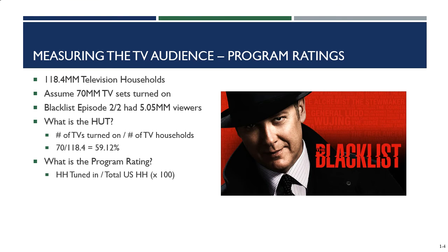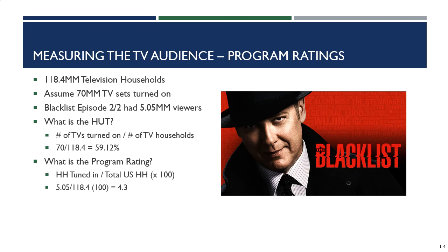Now let's look at the program rating. We take the number of households tuned into the episode and divide by the total number of U.S. households: 5.05 million divided by 118.4 million, multiplied by 100. The TV rating for that episode of Blacklist was 4.3. Is 4.3 high or low? We don't know — we can't determine that until we compare it to other programs that were airing at the same time on that same date.